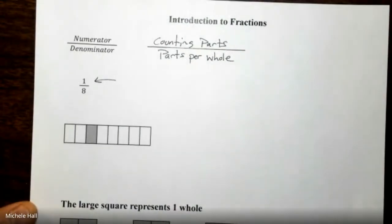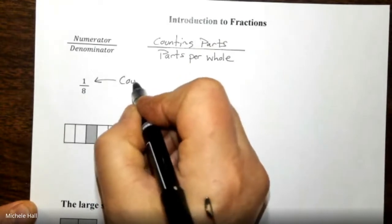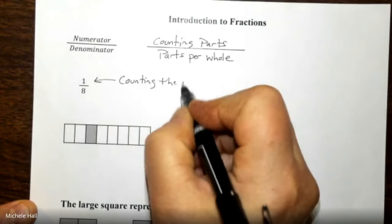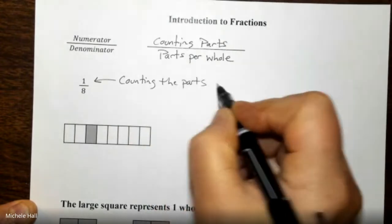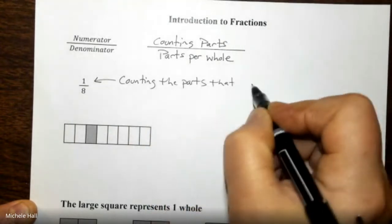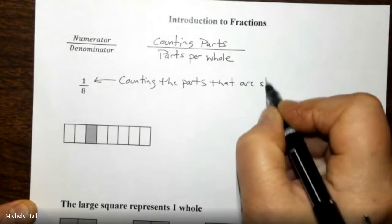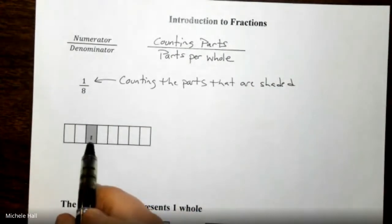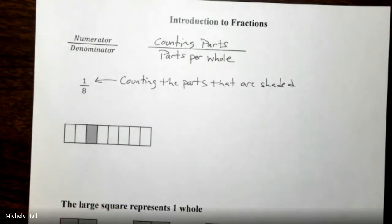Counting parts that are shaded, the numerator, you're counting the parts. Here we see that we have one part that is shaded. Number of equal parts per whole.